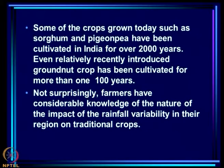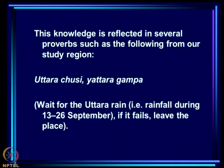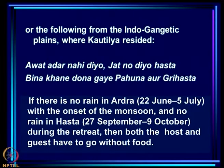Some crops grown today, such as sorghum and pigeon pea, have been cultivated in India for over two thousand years. Even the relatively recently introduced groundnut crop has been cultivated for more than one hundred years. Not surprisingly, farmers have considerable knowledge of the impact of rainfall variability on traditional crops. This knowledge is reflected in several proverbs, such as from our study region: 'Uttara chusi yattaragampa' — wait for the Uttara rain, that is rainfall during 13 to 26 September; if it fails, leave the place. So if rain fails during the Uttara period, it is much better to simply leave the place and not worry about the crop in the field.